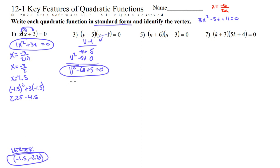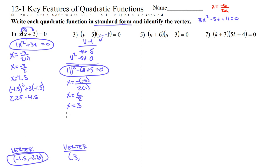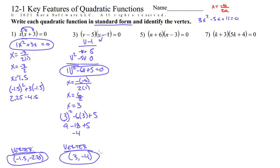Now we can use our axis of symmetry formula. x equals negative b, which is negative 6, all over 2 times a, which is 1. So we get x equals negative negative 6 — that's 6 over 2 — so x is 3. The vertex x-value is 3. Now we're going to plug 3 into our standard form: 3 squared minus 6 times 3 plus 5. 3 squared is 9, negative 6 times 3 is negative 18, plus 5. So 9 minus 18 plus 5 gives us negative 4. Our vertex is (3, −4).